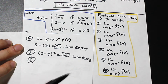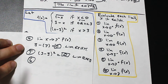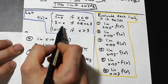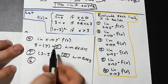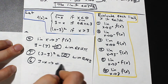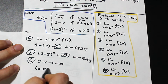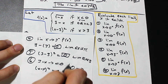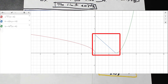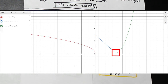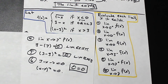Finally, we evaluate the two-sided limit as x approaches 3. From the left, 3 minus x gives 0; from the right, (x minus 3) squared also gives 0. Since 0 equals 0, both functions approach each other as x equals 3 from both sides. Looking at the screen — the left blue function is 3 minus x, and the right green function is (x minus 3) squared — as they approach x equals 3, both arrive at y equals 0. The limit exists at x equals 3.